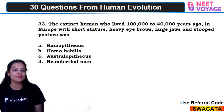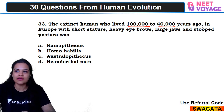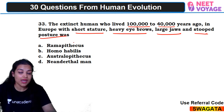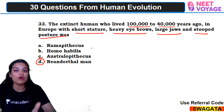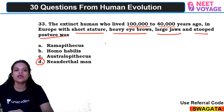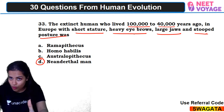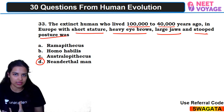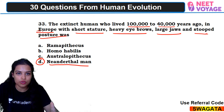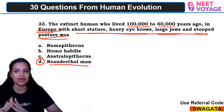Bonus question 33: the extinct human who lived 100,000 to 40,000 years ago in Europe with short stature, heavy eyebrows, large jaws, and stooped posture. This is Neanderthal man — most of Neanderthal man's fossils were found in Europe, not Africa. They had short height, protruding eyebrows, larger jaw size, and stooped posture. So D — Neanderthal man — is the right answer.